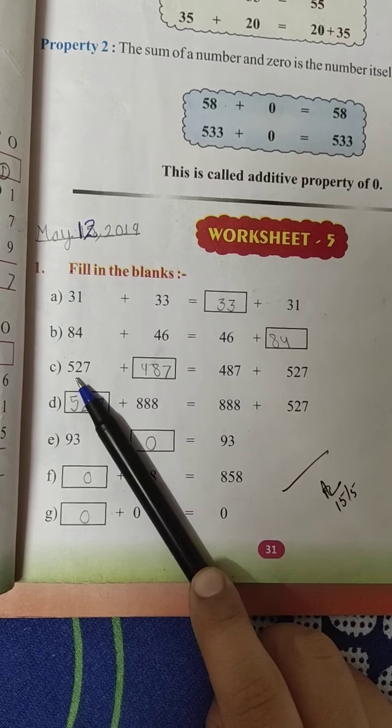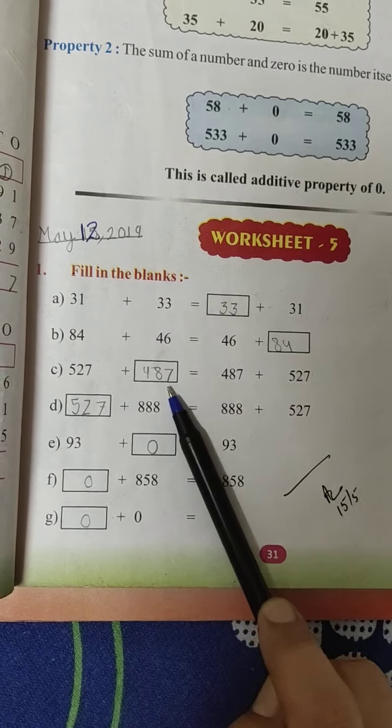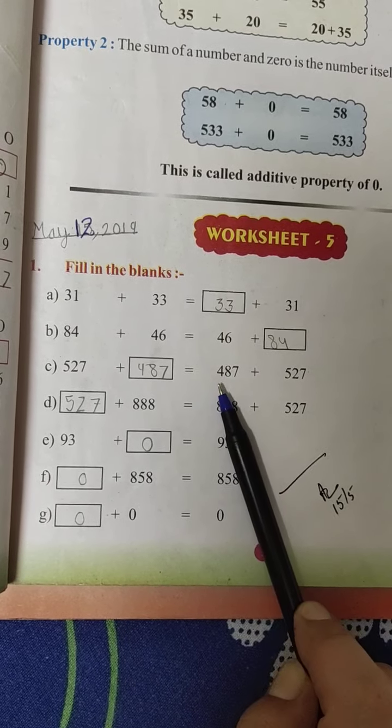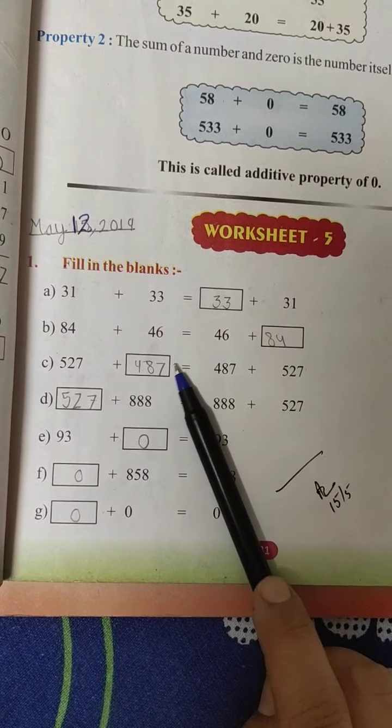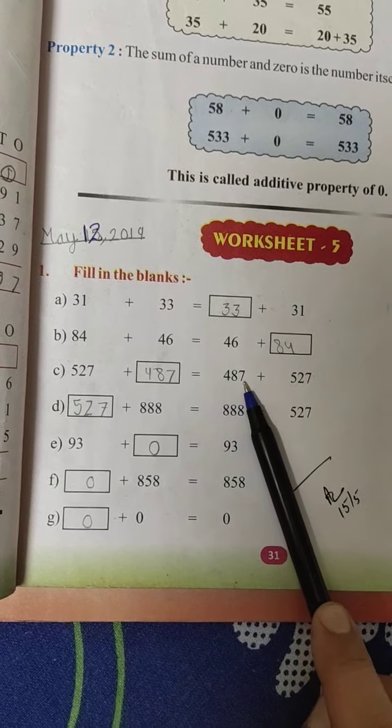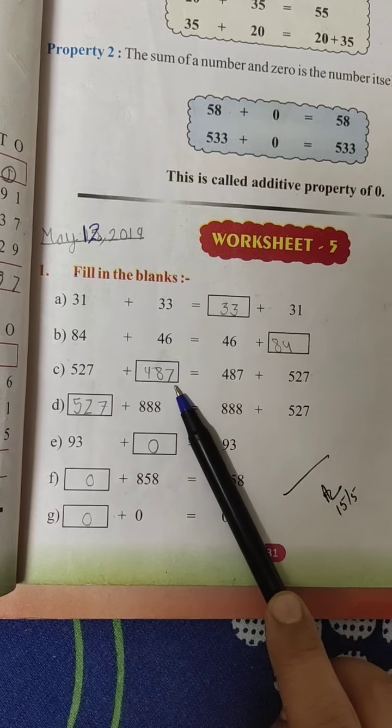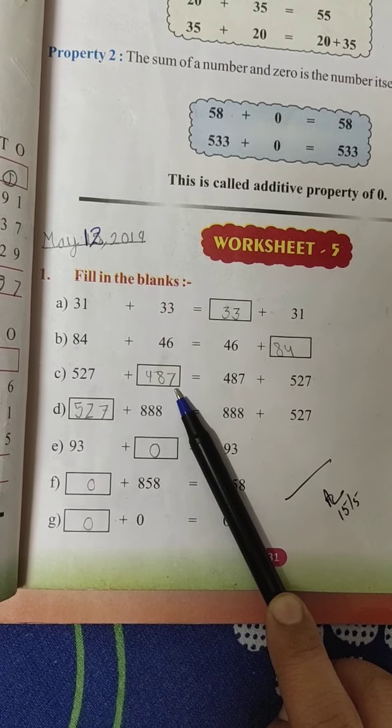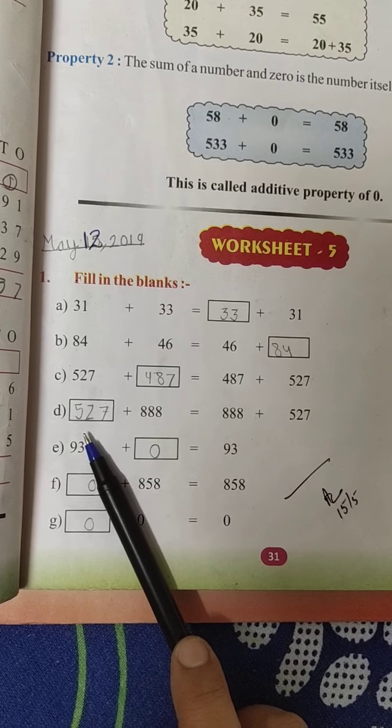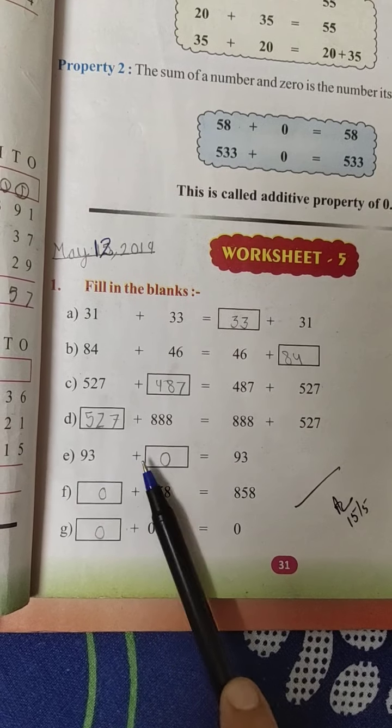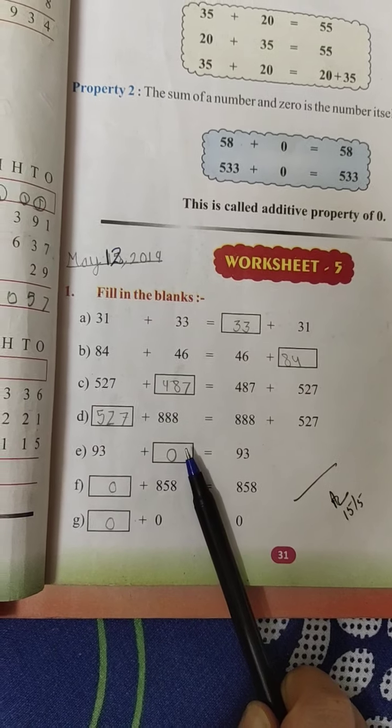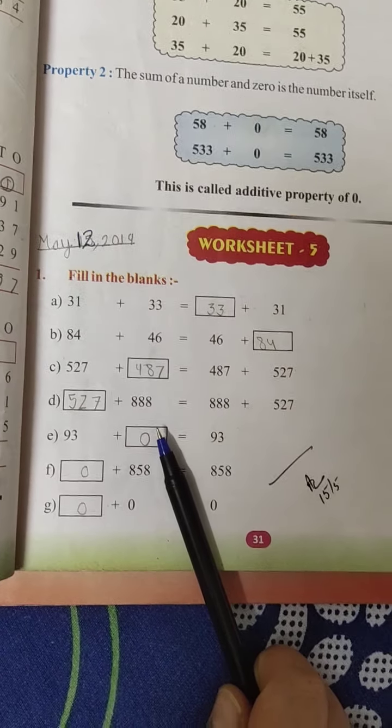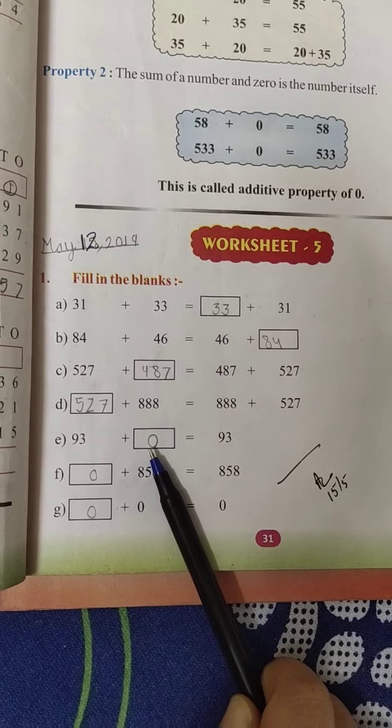C part: 527 plus blank is equal to 487 plus 527. So on this left side, what is not there? 487. So we will mention it. Clear? D part you will do on your own. Now see: 93 plus blank is equal to 93. What should I add to 93 to get 93? Nothing, so what comes? 0.